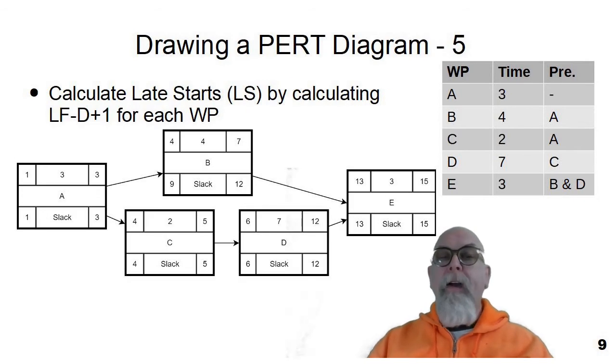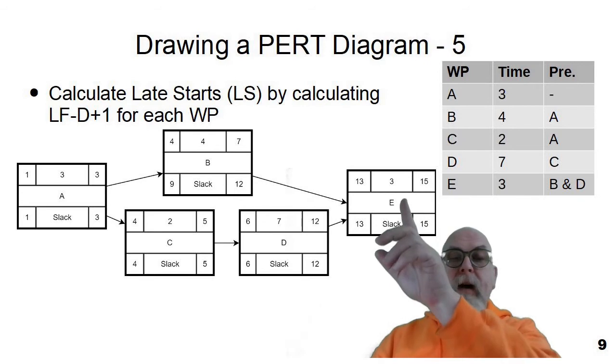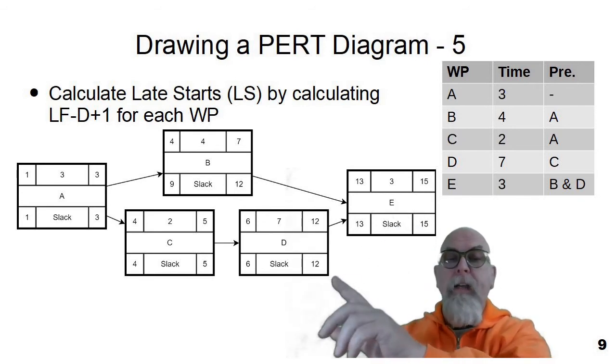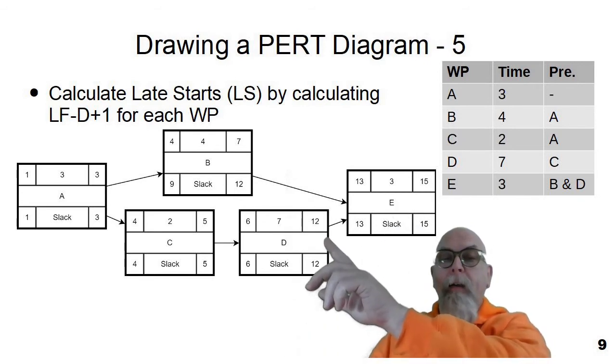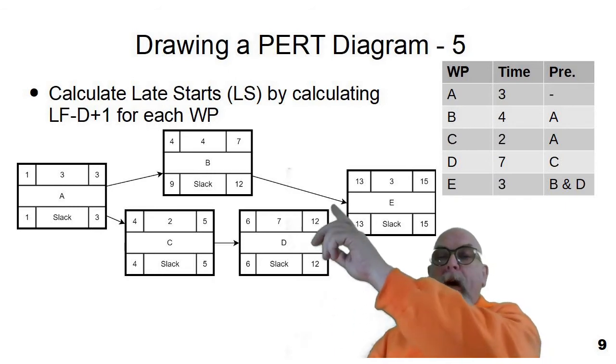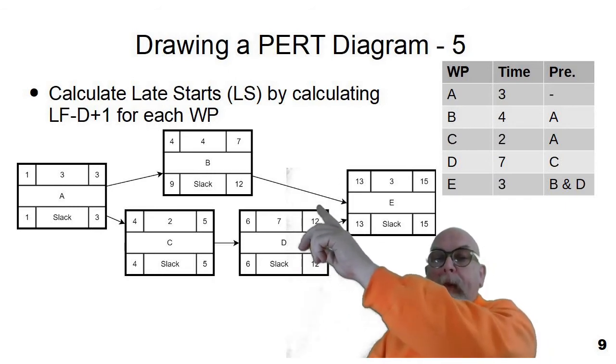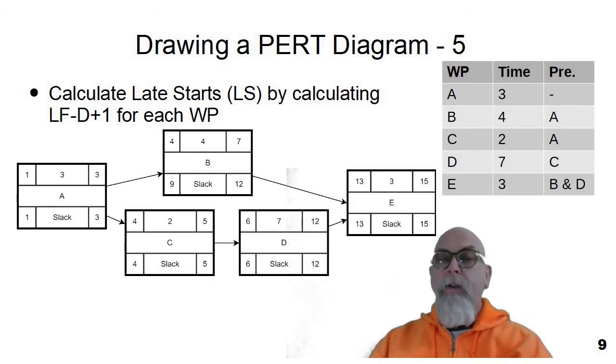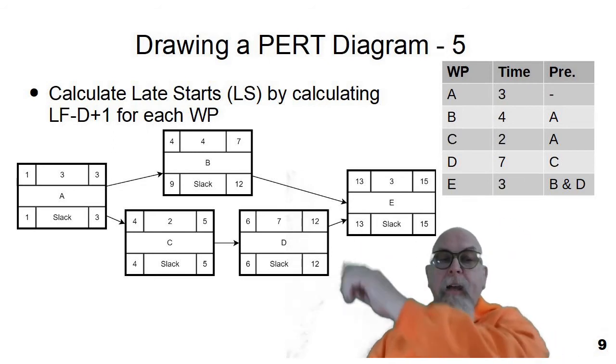Now that we've calculated late finishes, let's go through and calculate late starts by using the formula late finish minus duration plus one for each work package. So you can see fifteen minus three plus one is thirteen, twelve minus seven plus one is six, twelve minus four plus one is nine. And you can just go through each of the tasks and populate late start.